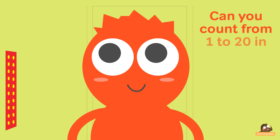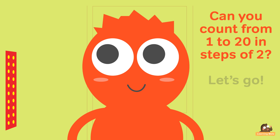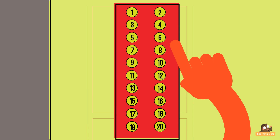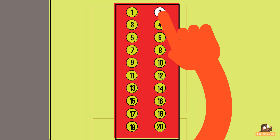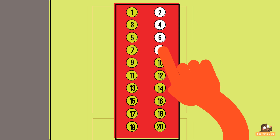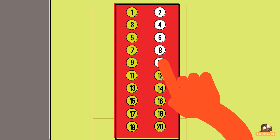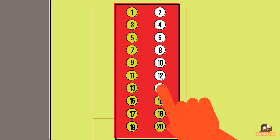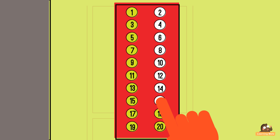Can you count from 1 to 20 in steps of 2? Let's go: 2, 4, 6, 8, 10, 12, 14, 16, 18, 20.